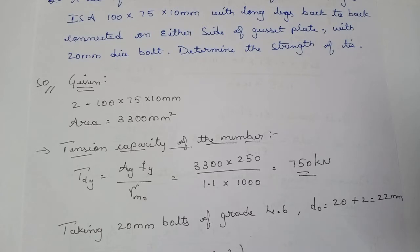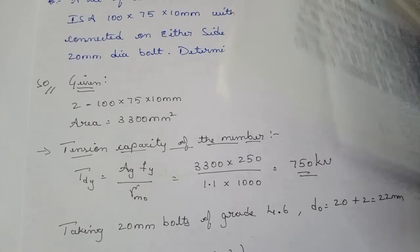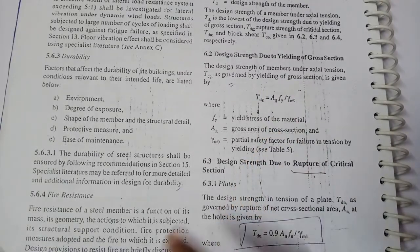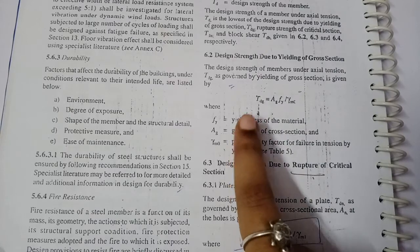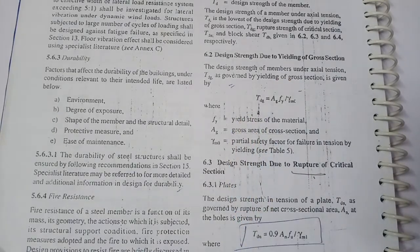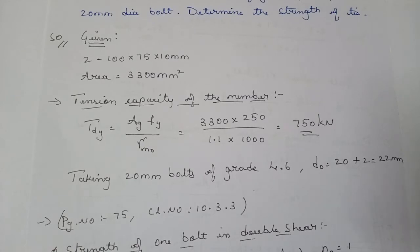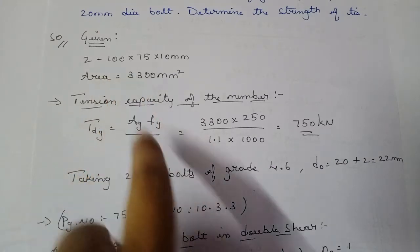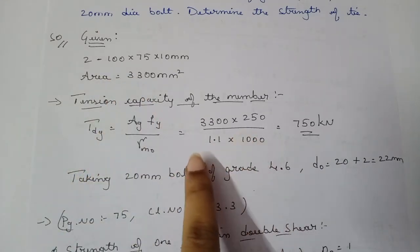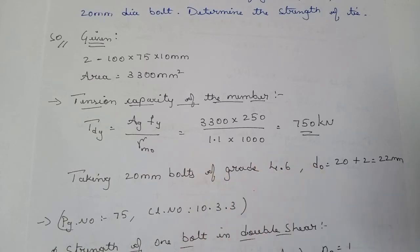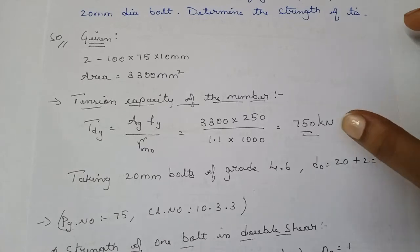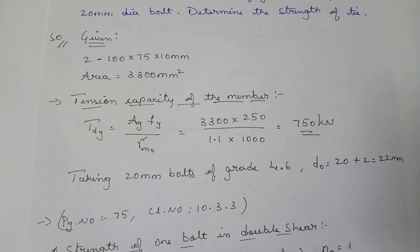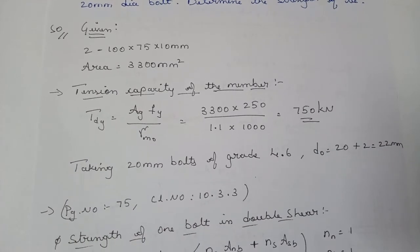Tdg equals Ag×fy divided by γm0 — that is the tension yielding capacity. This formula is in the code book on page 32. Substituting: Ag from the steel table, fy = 250, γm0 = 1.1, and dividing by 1000 to convert to kilonewtons, we get Tdg = 750 kN. This is the tension capacity of the member against yielding.